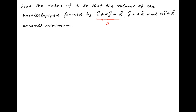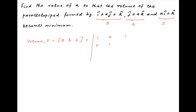Let's denote the three vectors by A, B, and C respectively. Now the volume of the parallelepiped formed by these three vectors, let's denote it by V, is equal to the scalar triple product of vectors A, B, and C. This can be expressed in determinant form, with the first row being the components of vector A, the second row being the components of vector B, and the third row being the components of vector C.